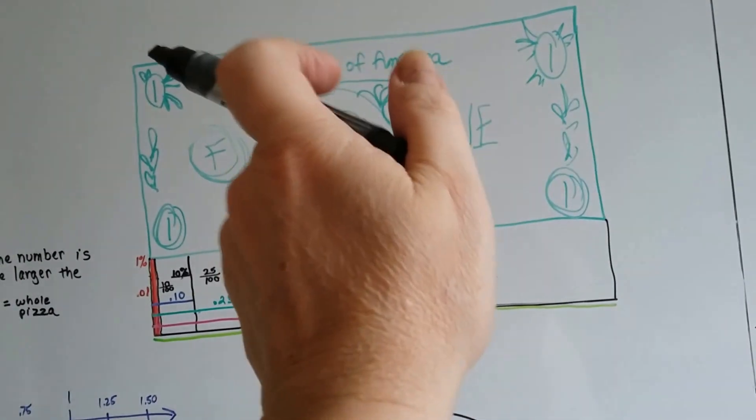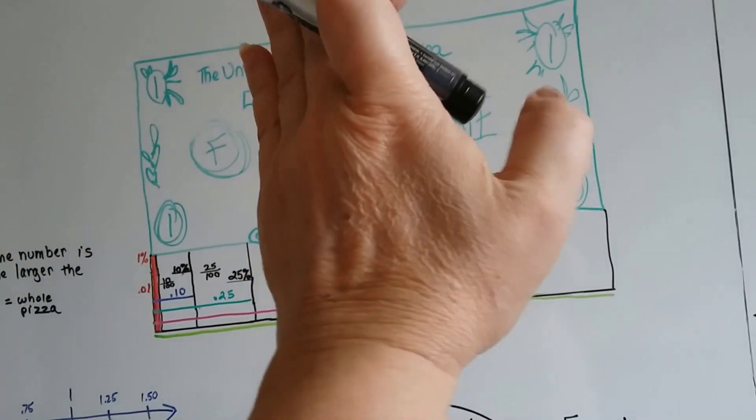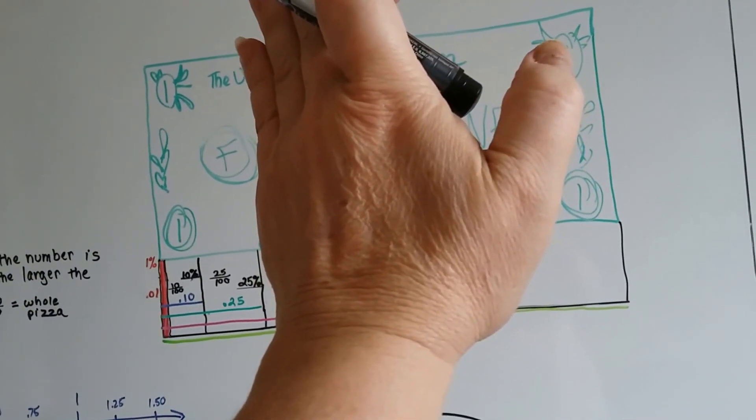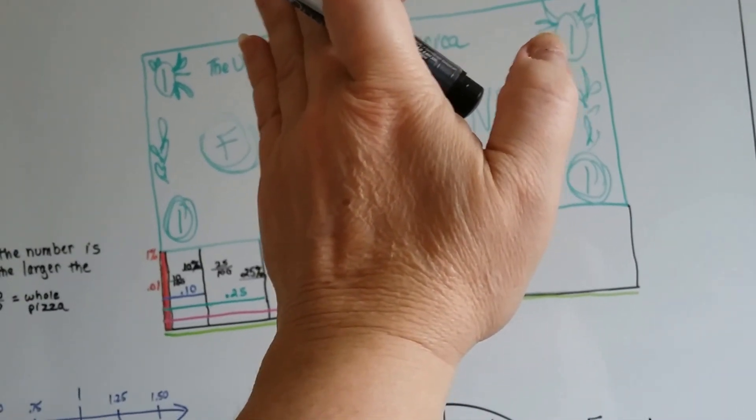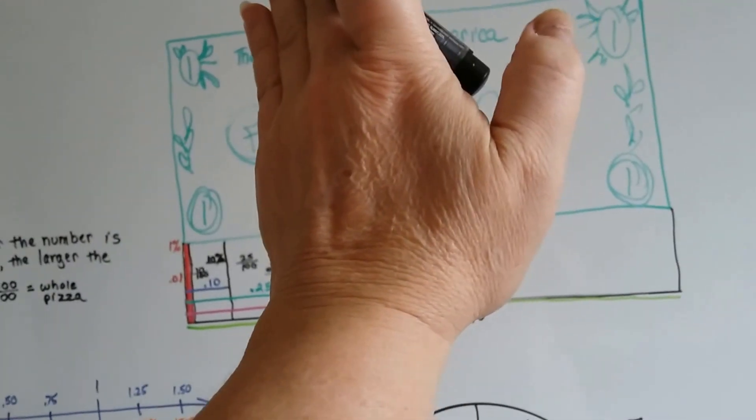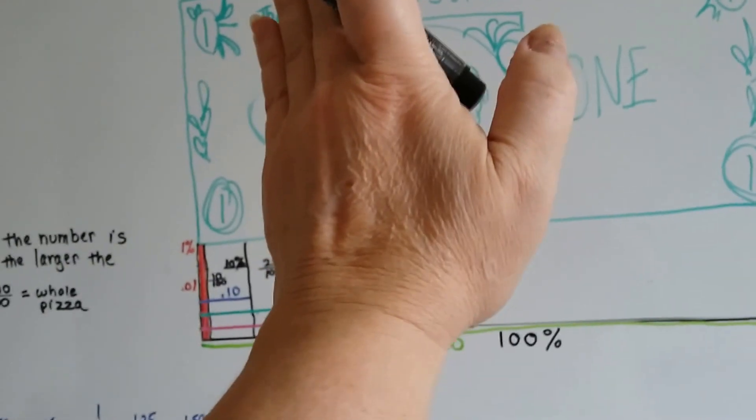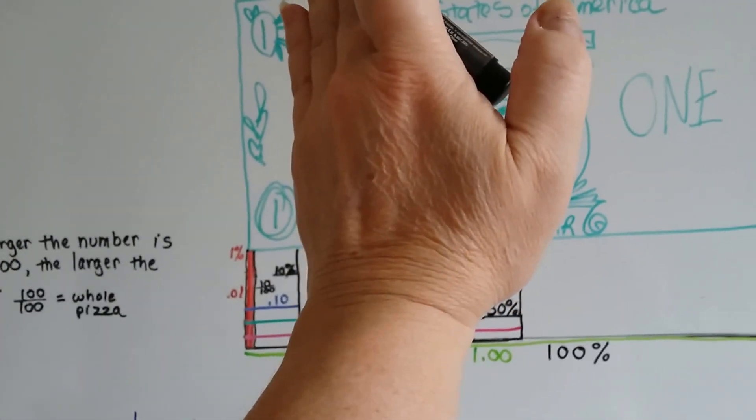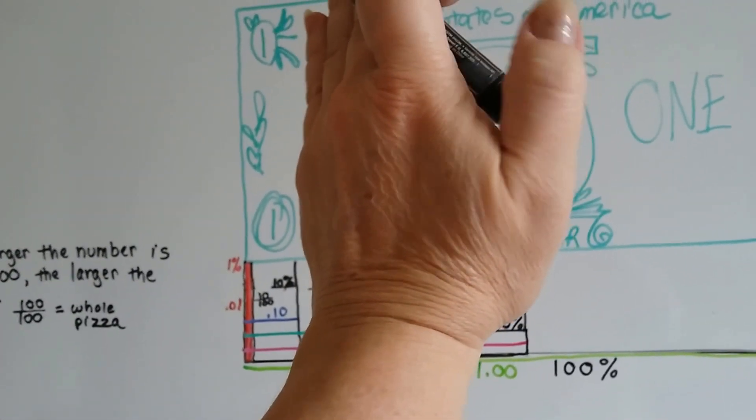This is 25 percent of the dollar. Just this little part with the ones here and the letter F. That's it. 0.25, 25 over 100. 25 pennies out of 100. This little section right here would be 10 cents of the dollar. That's 10 percent of the dollar.